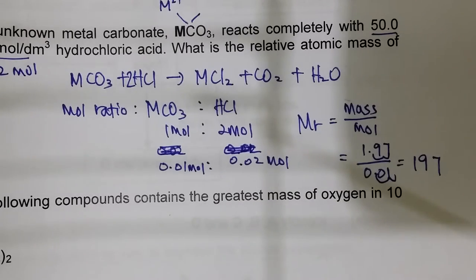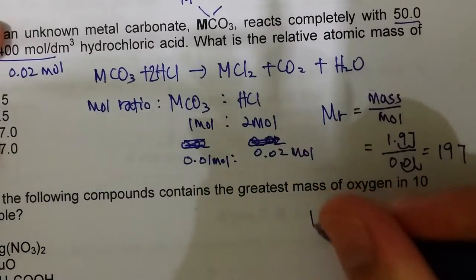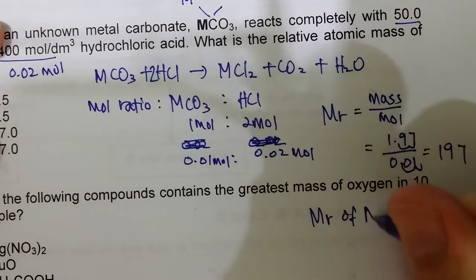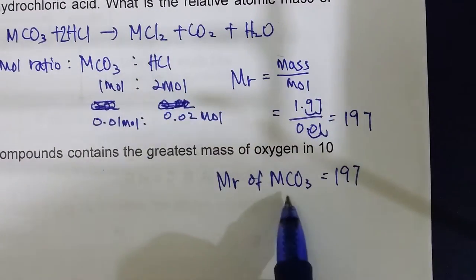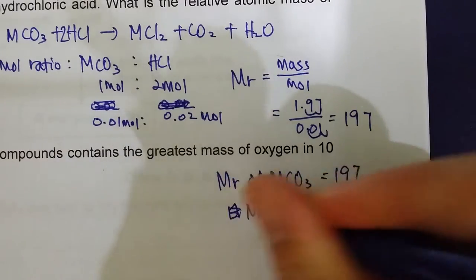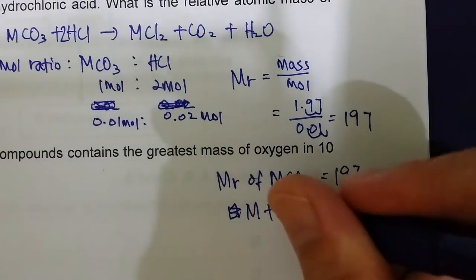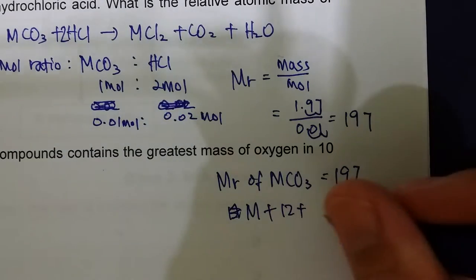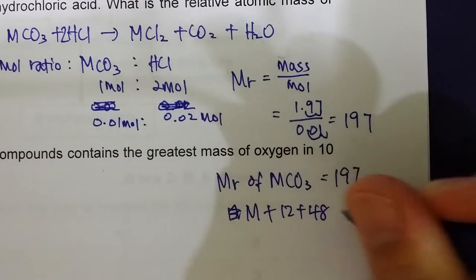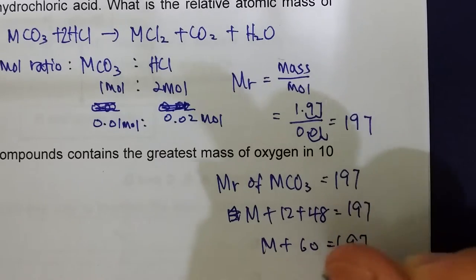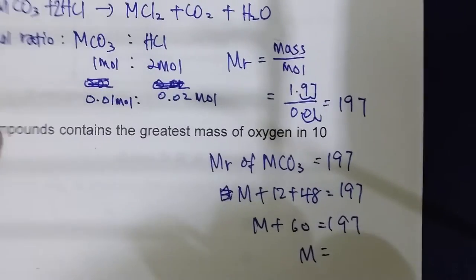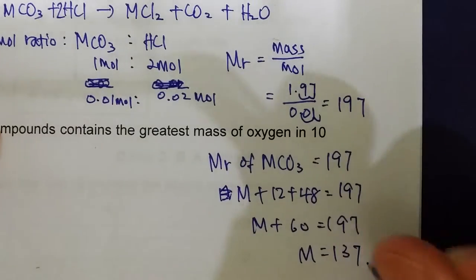The Mr of MCO₃ is 197. To find the Ar of M: Ar(M) + 12 + (16 × 3) = 197, so Ar(M) + 60 = 197, giving Ar(M) = 137. The relative atomic mass of M is 137, so the answer to question two is C.